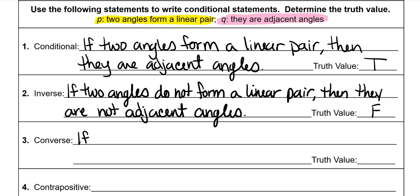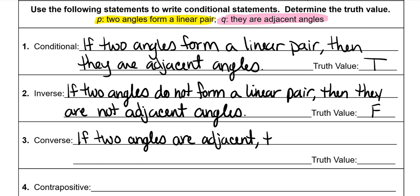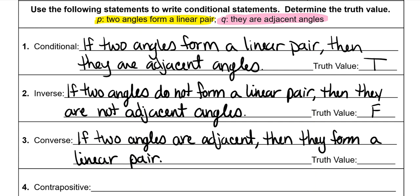The converse is flip-flop, so instead of if P then Q we say if Q then P. My Q is 'they are adjacent angles,' so instead of using the pronoun 'they' we replace it with 'two angles': if two angles are adjacent. Then we can use 'they' again: then they form a linear pair. But that's not true — I can use the exact same example: these are two adjacent angles but they don't form a linear pair. So this is false.